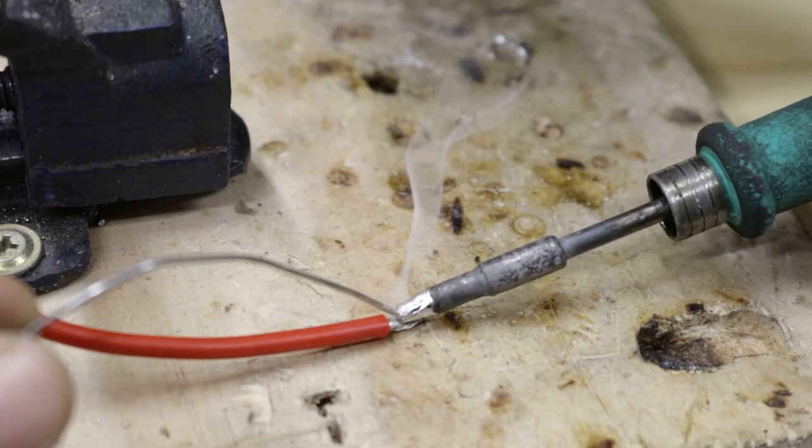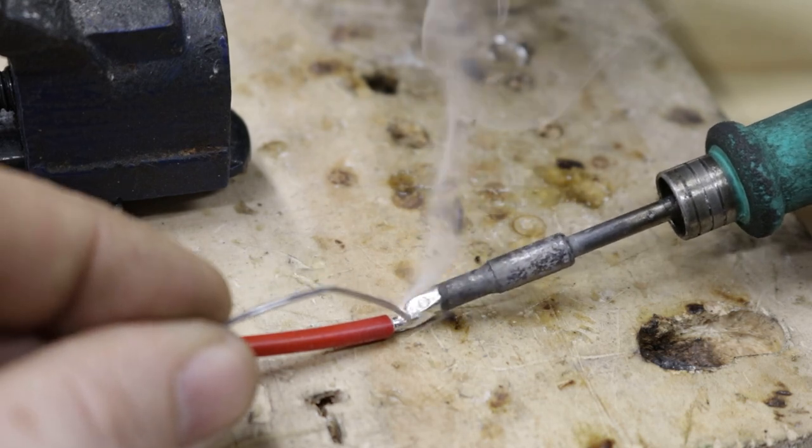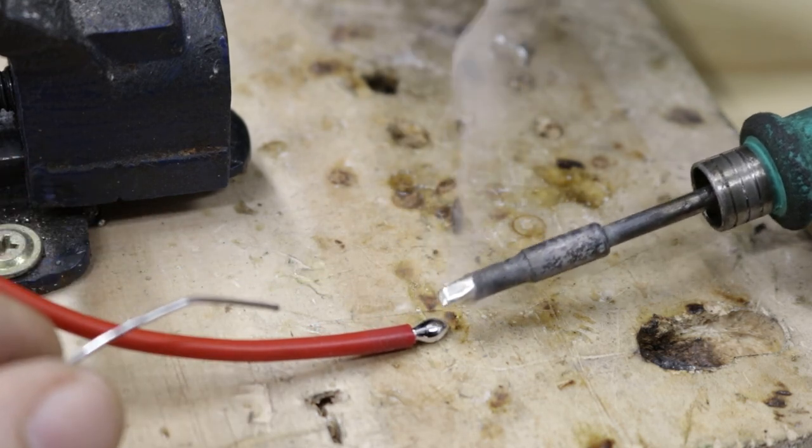When you're soldering a wire to a connector, like a Dean's or Traxxas connector, generally you will melt a generous amount of solder onto the wire and put only a slight amount on the contact.